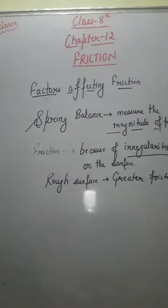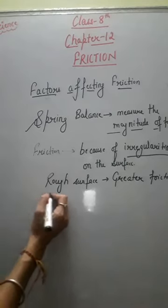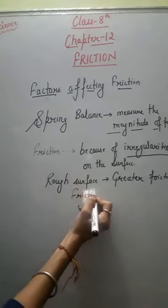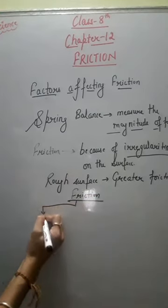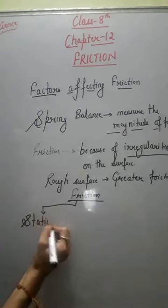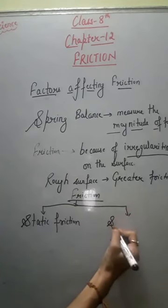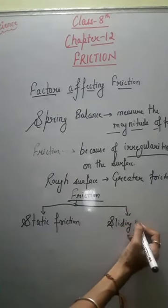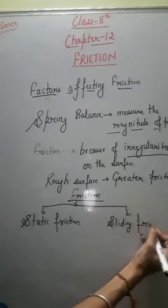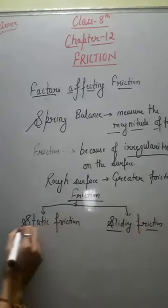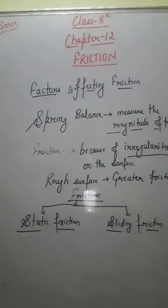Similarly, if you want to move anything on a sliding surface, it will be easier to move. Because on a sliding surface, things do not get much time to interlock with the irregularities. So, there are basically two types of friction. First one is static friction, and second one is sliding friction. In this chapter, we are just going to learn about these two types of friction.